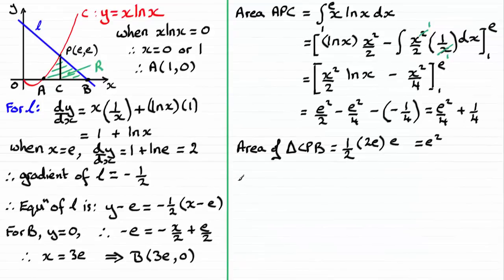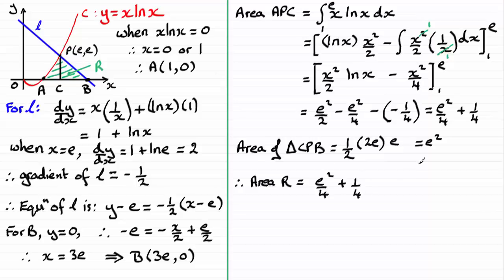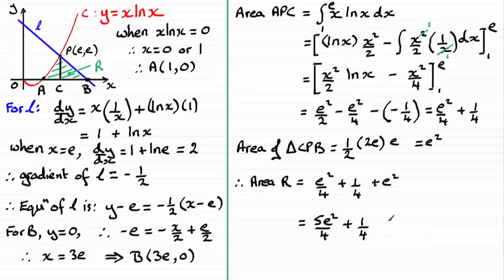Now we can work out the total area of R. It's the sum of the two areas: e²/4 + 1/4 plus e². Grouping the e² terms: a quarter e² plus a whole e² gives one and a quarter e², which is 5e²/4. So the area R = 5e²/4 + 1/4 square units.